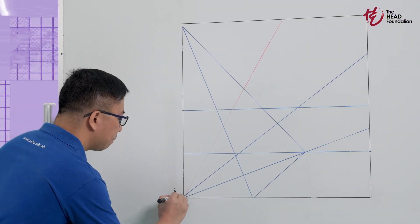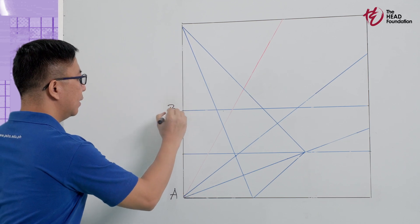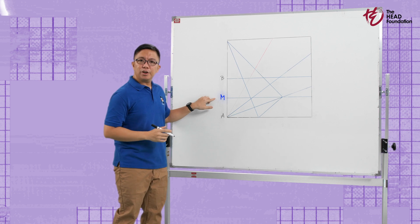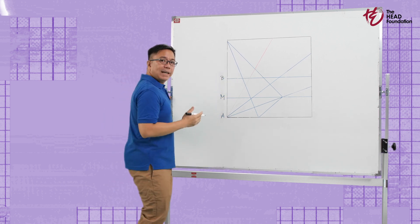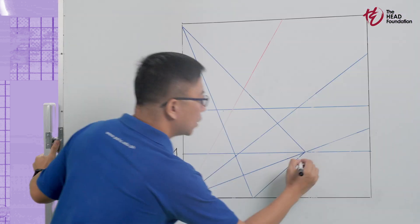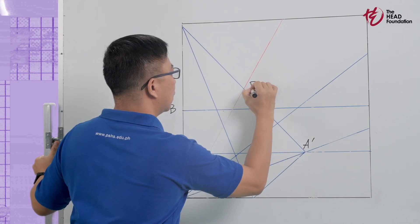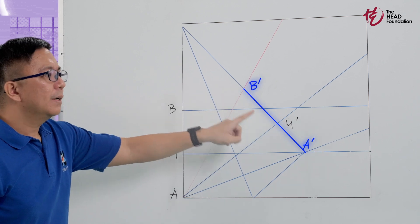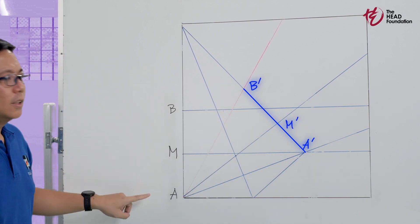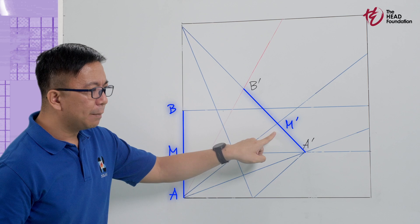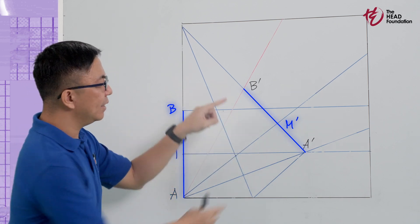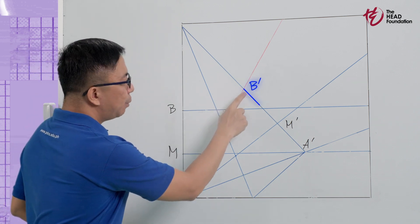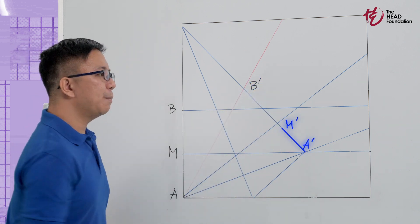Label A, B, and M. By our construction, M is the midpoint of segment AB. A prime, B prime, and M prime correspond to A, M, and B. And M prime is also the midpoint of segment A prime, B prime. This implies B prime M prime is equal to M prime A prime.